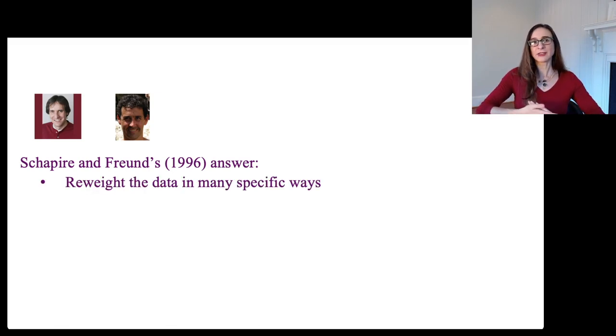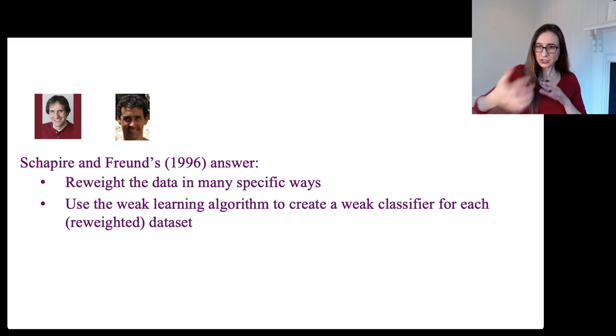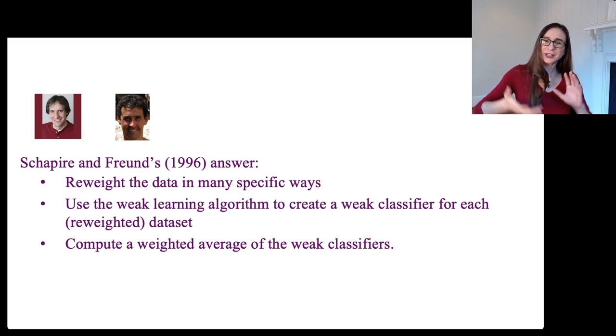Anyway, they figured out that you could reweight the data in different ways. If you find many different ways to reweight the data and then each time you reweight the data, you run the weak learning algorithm to give you a weak classifier for each reweighted data set. And then you could take those weak classifiers and combine them to produce a weighted average that was actually a nice strong classifier. So this is a boosted model here.